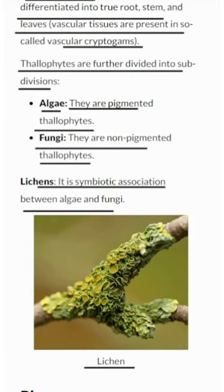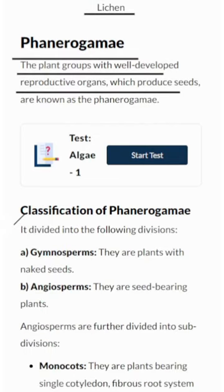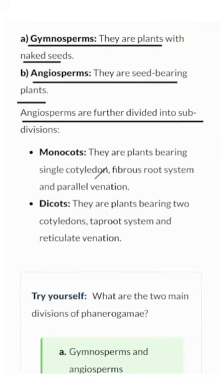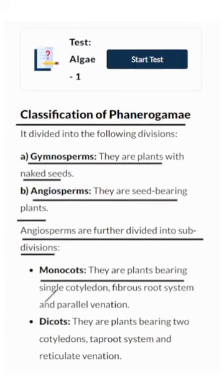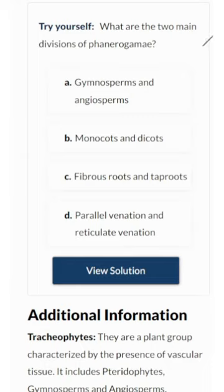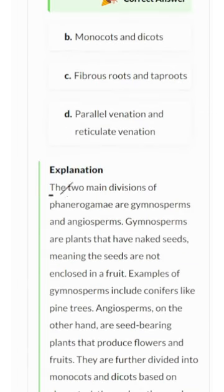Phanerogamy: these are the celebrities of the plant world — they have well-developed reproductive organs that produce seeds. Phanerogamy is classified into Gymnosperms, the trendsetters with naked seeds, and Angiosperms, the seed-bearing royalty often seen wearing fruits. Angiosperms are further divided into Monocots, with fibrous root systems and parallel venation, and Dicots, with taproot systems and reticulate venation. The two main divisions of Phanerogamy are gymnosperms and angiosperms.